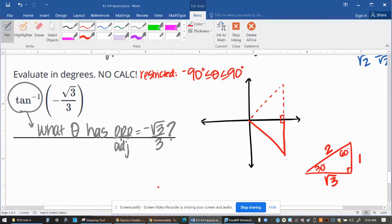For this problem, you are asked to find the tangent inverse of negative root 3 over 3. So in essence, you are trying to figure out what angle has opposite over adjacent, which is tangent, that equals negative root 3 over 3.